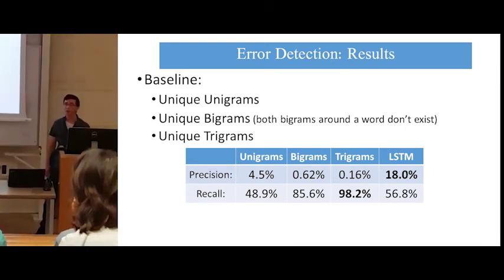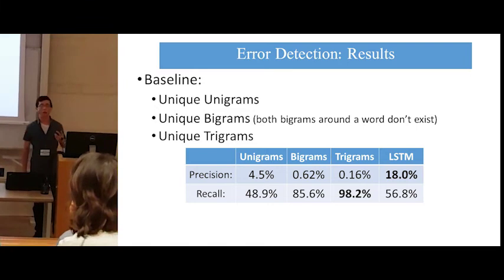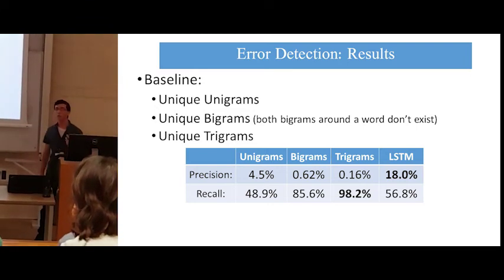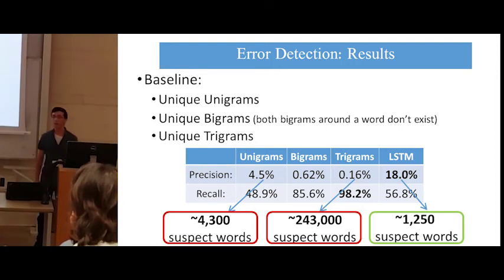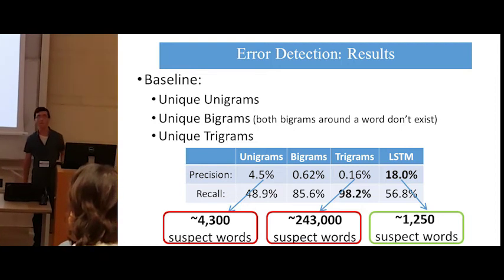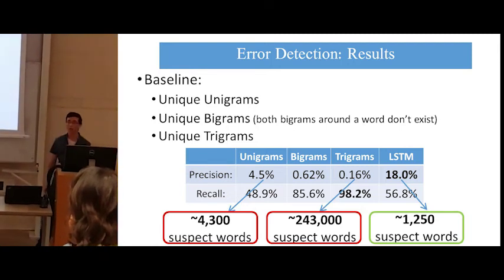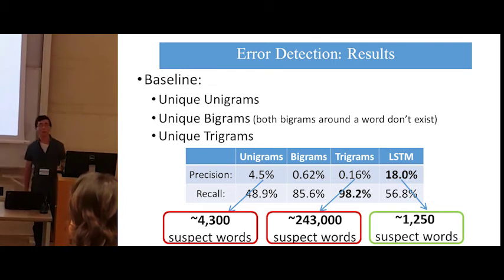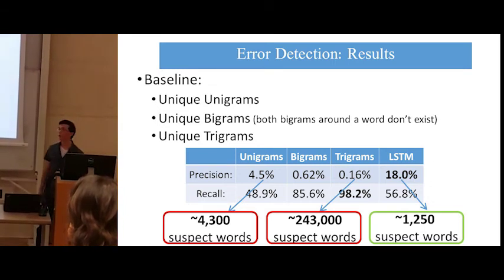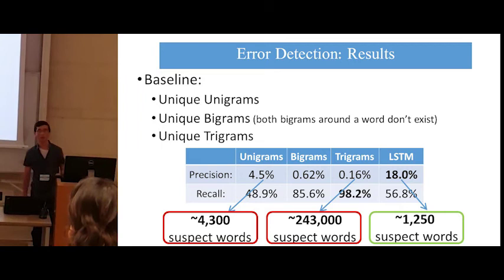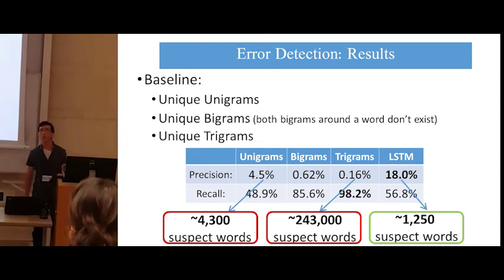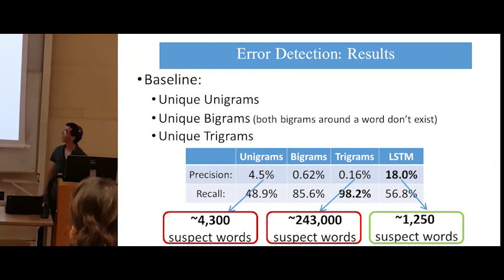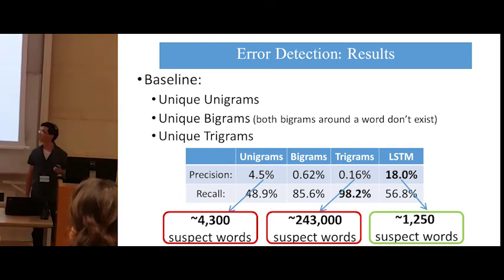The bigrams and trigrams method achieved a very high recall, but their precision was below 1%. In our test set, the trigrams method flagged over 243,000 words as suspected errors. The unigrams method did much better and only flagged 4,300 words as suspected errors. Our method, on the other hand, only flagged 1,250 words as suspected errors and still achieved a recall of over 50% — better than the unigrams.